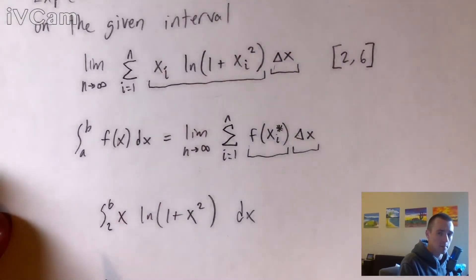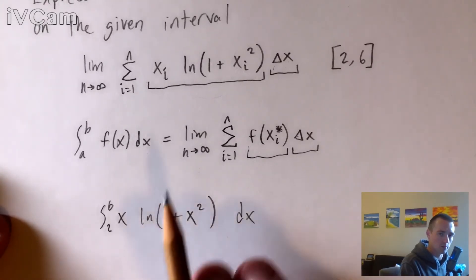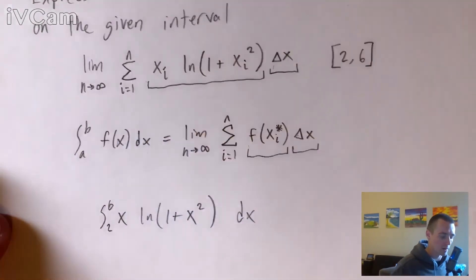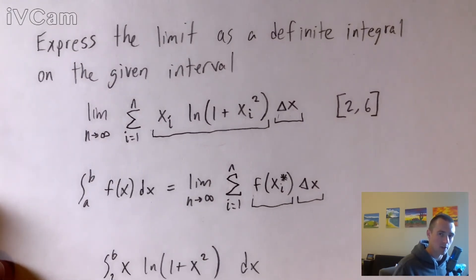So basically by using the limit definition of an integral, this integral right here is equivalent to this limit that we started with up here. So that's how we can express that limit as a definite integral over this given interval from 2 to 6.